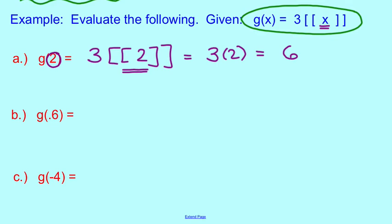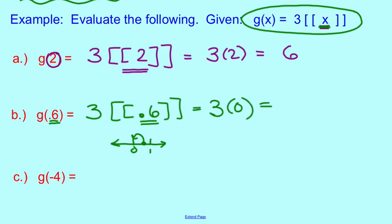Now let's evaluate it for 0.6. We're going to sub it in right here, so I say 3 times the step function evaluation of 0.6. Well, 0.6 is not an integer, so we have to round down. When you think about where 0.6 is on the number line, here is 0, here is 1. 0.6 is right here, so we have to round backwards, round to 0. So 3 times 0 is 0.